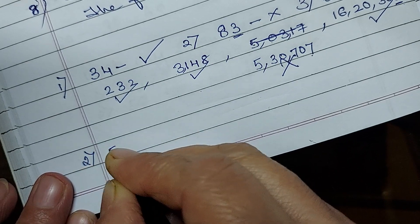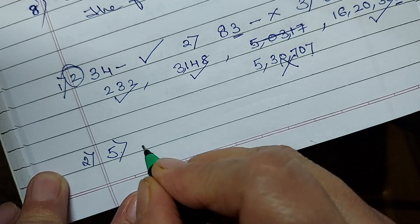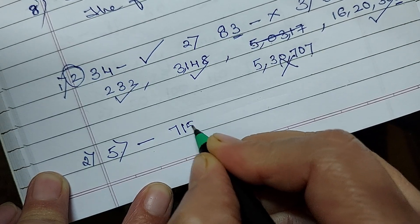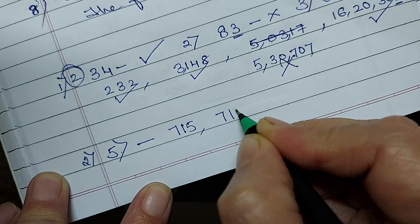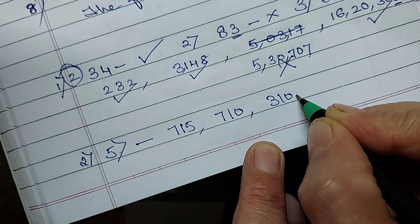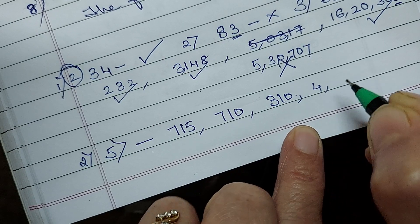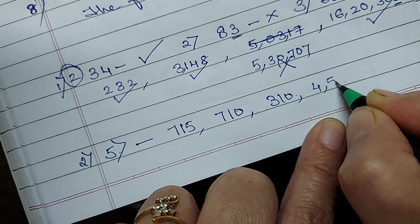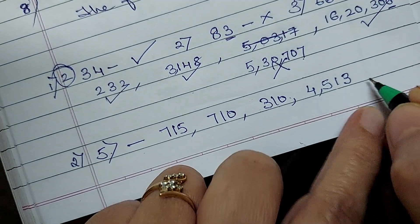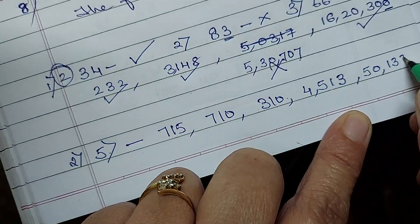Now coming to the next number, divisibility check of 5. This was of 2. Now 5, the numbers, the number which is ending with 5 or 0, it is divisible by 5. Same thing, let the number be big. Let it be any number. It is 4 digit, 6 digit or 8 digit. If the number is not ending with 5 or 0, it is not divisible by 5.